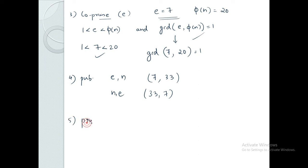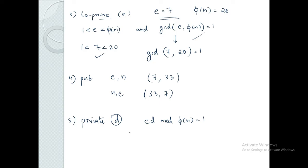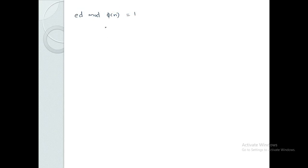The fifth step is to find the private key. We need to find the d value using the equation: e·d mod phi of N equals 1. Substituting the known values: 7·d mod 20 equals 1. So we need to solve 7d mod 20 equals 1.